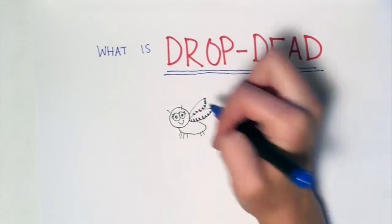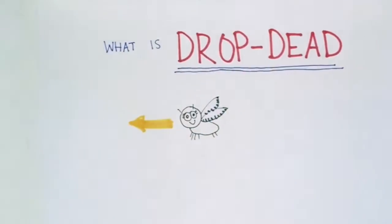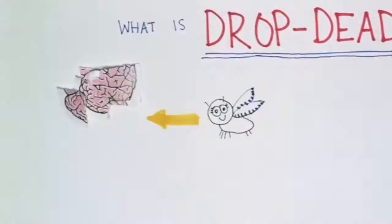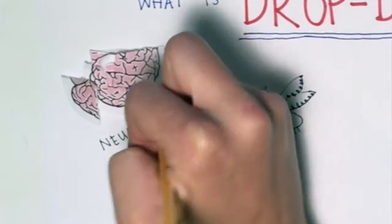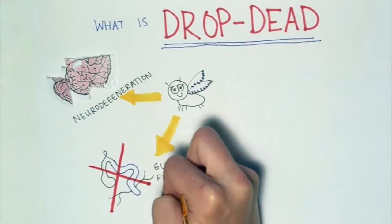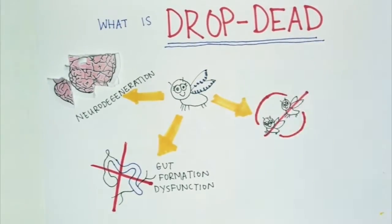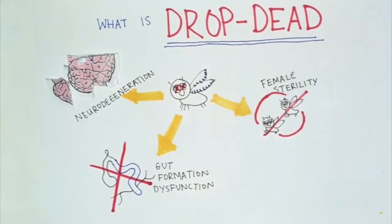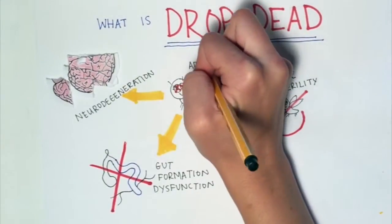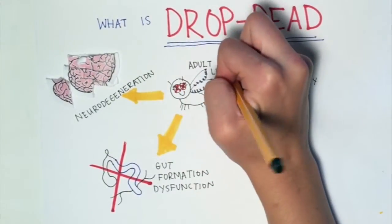Drop dead mutant flies display a phenotype of neurodegeneration, dysfunctional gut formation, female sterility, and ultimately adult lethality.